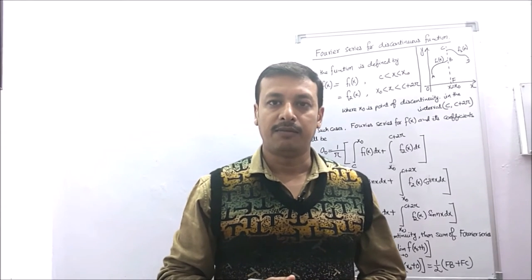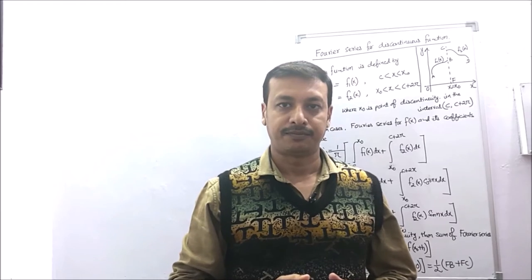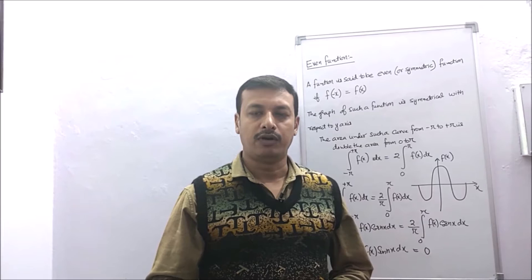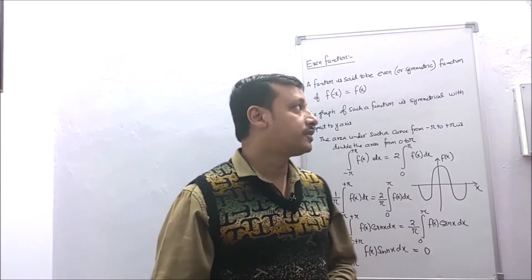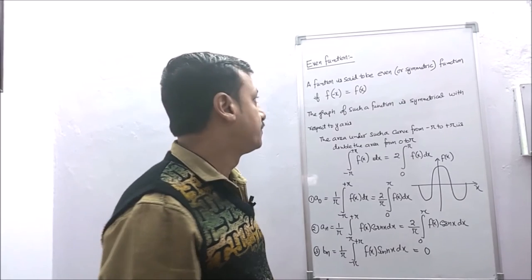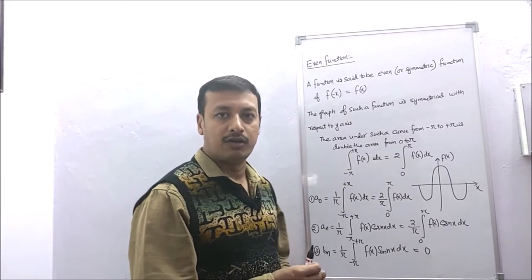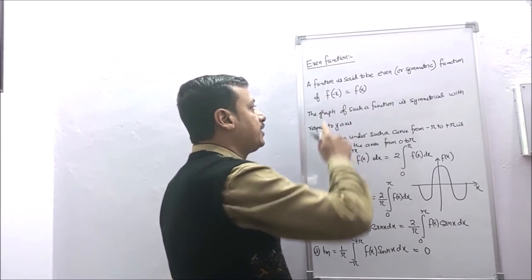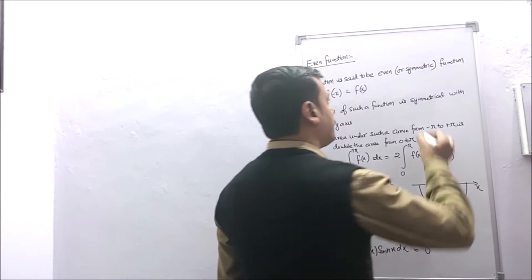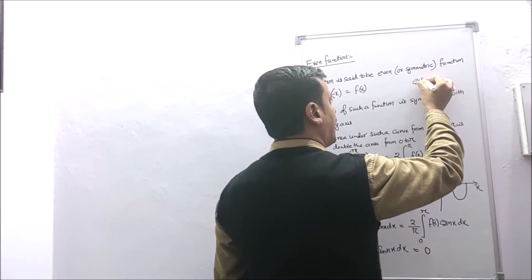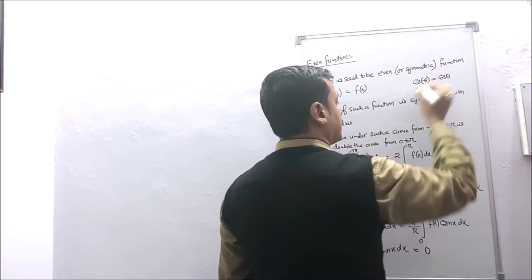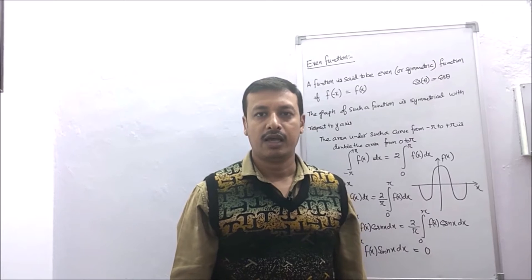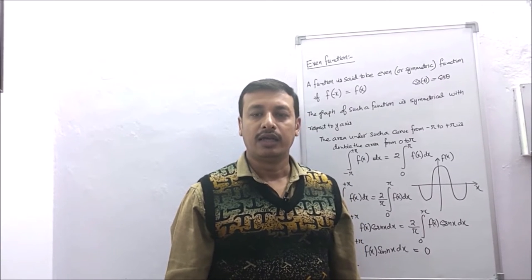Now we will study odd and even functions to derive their Fourier series. A function is said to be even, or sometimes called a symmetric function, if f(−x) = f(x). For example, cos(−θ) = cos(θ), so cosine is an even function. But sin(−θ) = −sin(θ), so sine is not an even function.